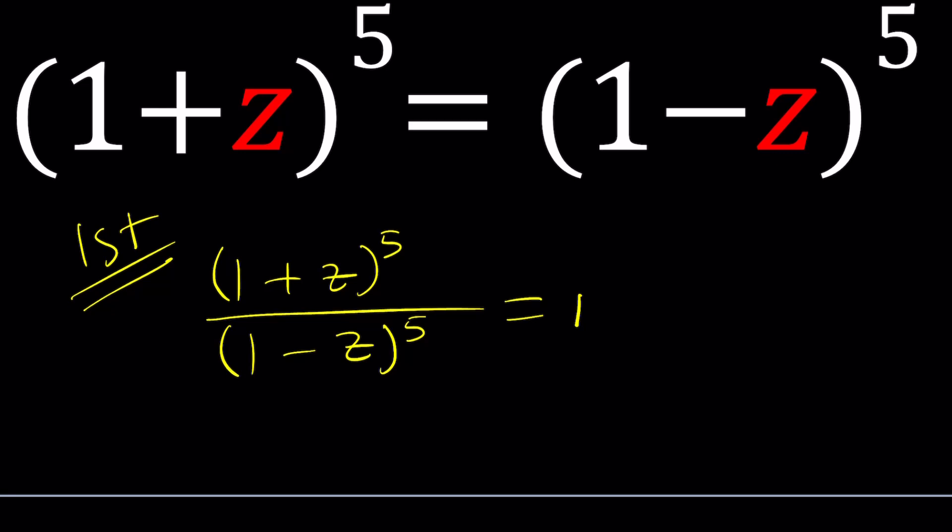If you think about it, the first term is positive. This is actually the opposite of z minus 1 to the 5th power, and from here you can tell z to the 5th is going to be negative. So when you put them on the same side you're going to have 2z to the 5th power — z to the 5th is not going to cancel out, so this is a quintic equation indeed. But it's a very special quintic, as you'll see.